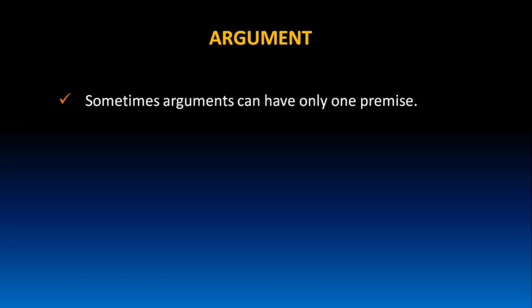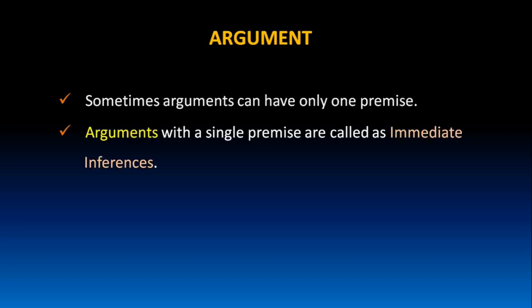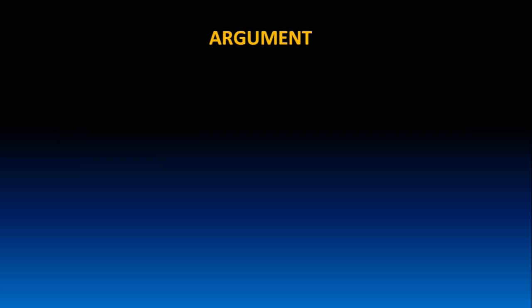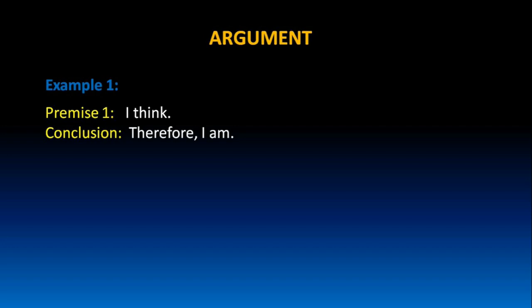Sometimes arguments can have only one premise. Arguments with a single premise are called immediate inferences. Let us take a few examples. I think. Therefore, I am. It is an argument with a single premise. Such arguments are called immediate inferences.